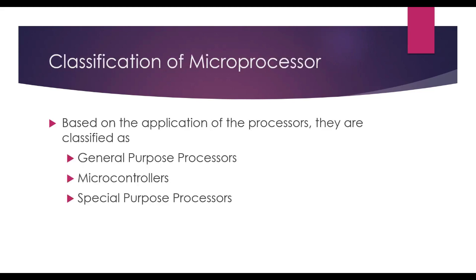So let us start with the classification of microprocessors. Based on the application of the processor, they are classified as: general purpose processor, microcontroller, and special purpose processor. General purpose processor means whatever processor we are using nowadays in our computers. Microcontrollers are the chips used in devices like washing machines. And in the special purpose processor category, there is the digital signal processor.